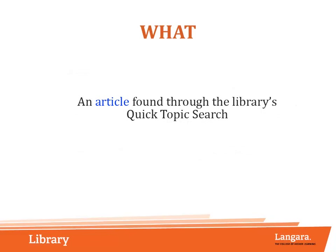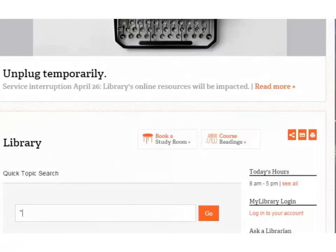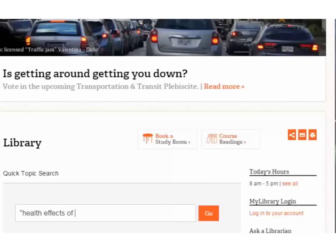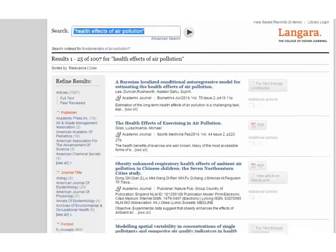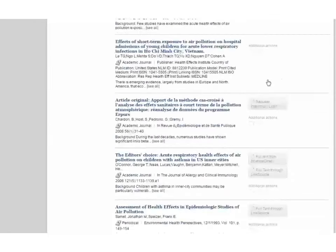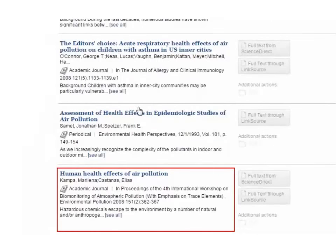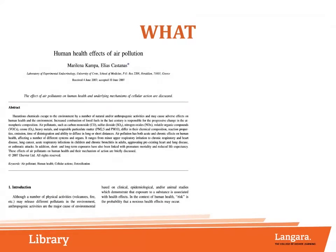Our next example is an article we found through the library's Quick Topic Search. This search will return books, media, and both scholarly and popular articles from the library's databases. Let's use the same research topic and see what we find. Let's take a closer look at this source from our search results and decide what kind of source we are really looking at. There are many different types of sources for one topic, and it's up to you to choose appropriate source types for your assignments.